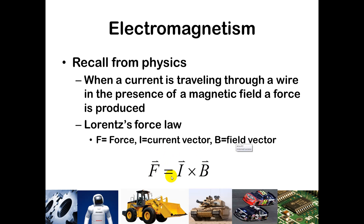The force is equal to the cross product of the current vector and the field vector. You're going to see this force vector coming out perpendicular to wherever the field and the current happen to intersect. When you have a current going through a wire within the presence of a magnetic field — that could be an electromagnetic field or a field created by a fixed magnet — a force is produced.